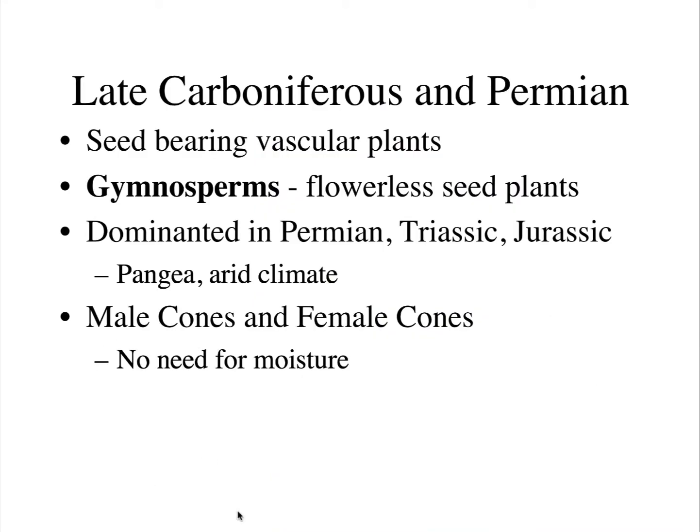By late Carboniferous and into the Permian, seed-bearing vascular plants began to take over, especially the gymnosperms — the flowerless seeded plants — which started making conifer forests. By the time we get into the Triassic and Jurassic, the Mesozoic era, we find huge conifer forests of gymnosperms. With male and female cones, there's no need for moisture.